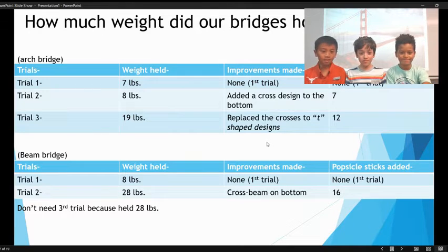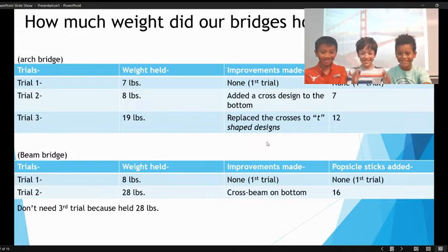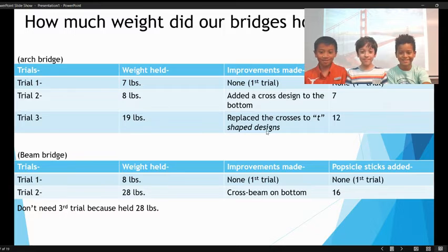For our Beam Bridge, Trial 1 held 8 pounds as our first try. For Trial 2, our Beam Bridge held 28 pounds. We made a cross-beam on the bottom and added 16 popsicle sticks.